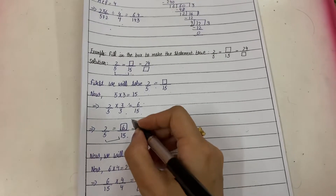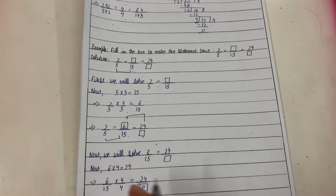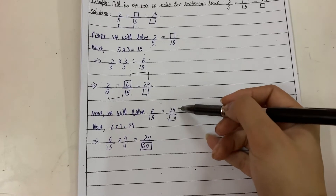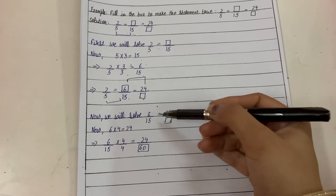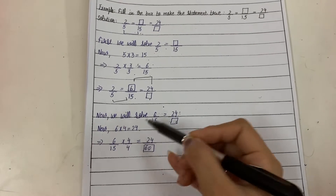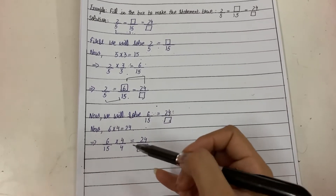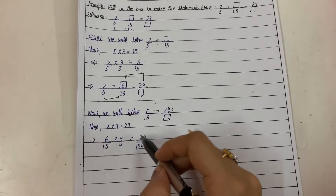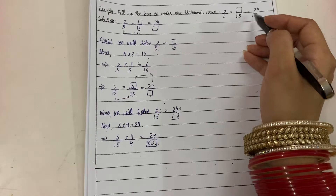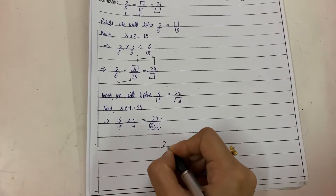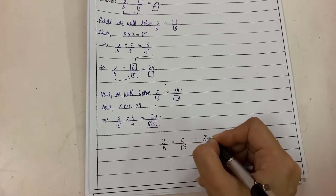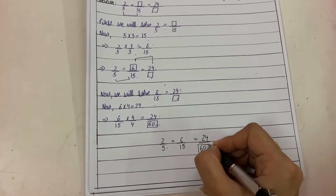Now we solve: 6 upon 15 equals 24 upon box. We need to find the denominator. The numerators are given, so we find the relationship between 6 and 24. 6 into 4 equals 24. If we multiply the numerator by 4, we multiply the denominator by 4 as well. So 15 into 4 is 60. The second box value is 60. Therefore: 2 upon 5 equals 6 upon 15 equals 24 upon 60.